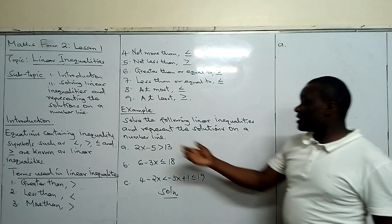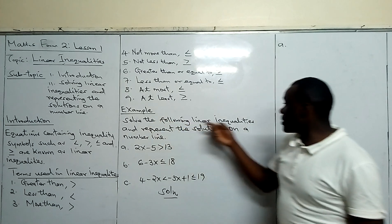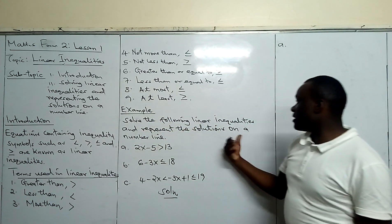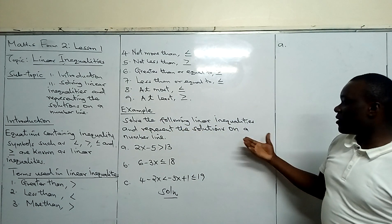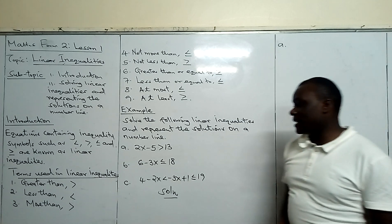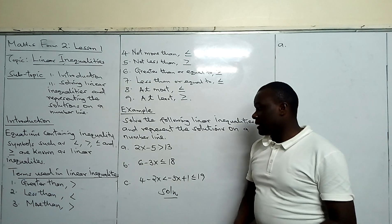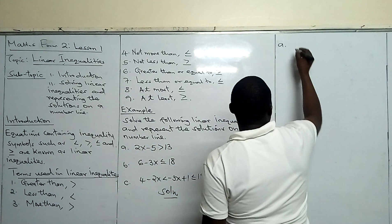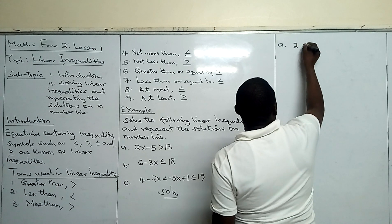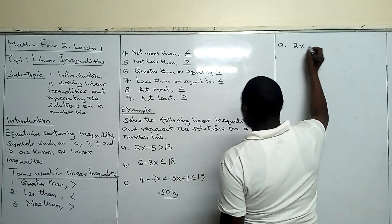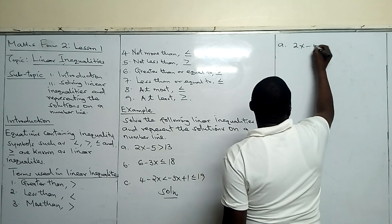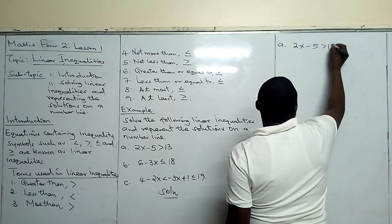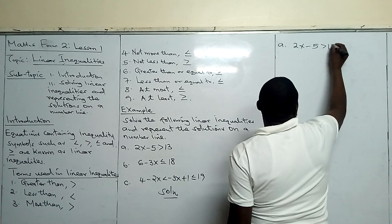Let's look at our example, which says: solve the following linear inequalities and represent the solutions on a number line. We will start from A, whereby we have 2x minus 5, greater than 13.